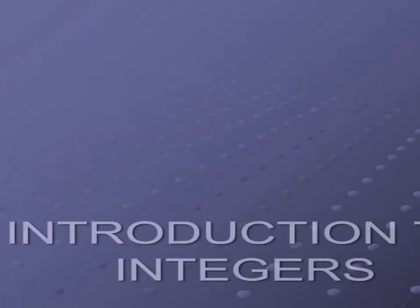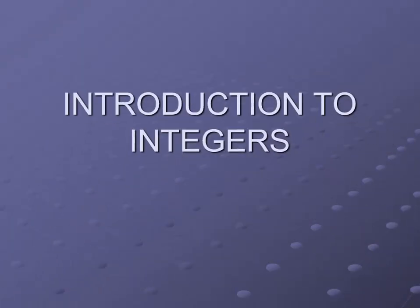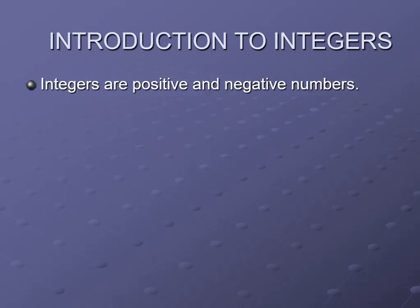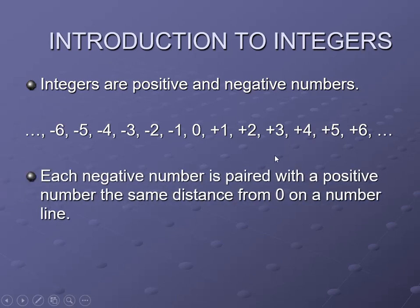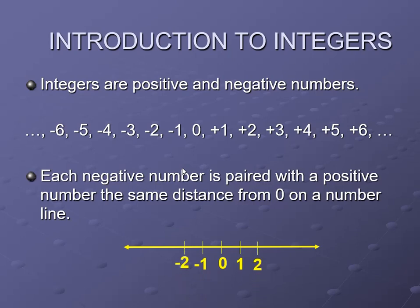Let us begin with an introduction to integers. Integers are positive and negative numbers — from negative infinity to zero, and then positive up to infinity. For example: minus 6, minus 5, minus 4, minus 3, and so on. On a number line, the middle is 0, and for every positive number there exists a corresponding negative number the same distance from 0.